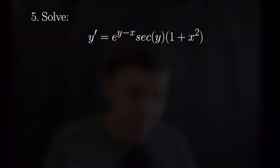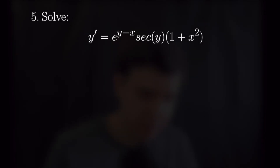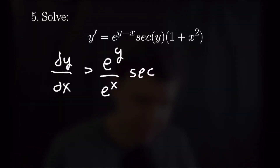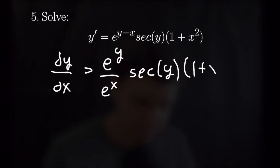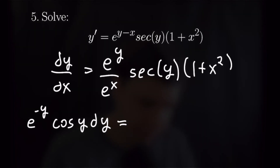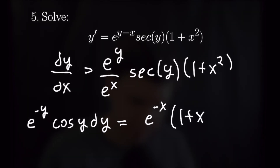Number five is y prime equal to e to the y minus x times the secant of y times 1 plus x squared. Writing y prime as dy/dx, that equals e to the y over e to the x times the secant of y times 1 plus x squared. Moving y terms and dx to their respective sides, we'll have e to the minus y times cosine of y dy on this side, equal to e to the negative x times 1 plus x squared dx on the other side, and we'll take the antiderivative of both sides.